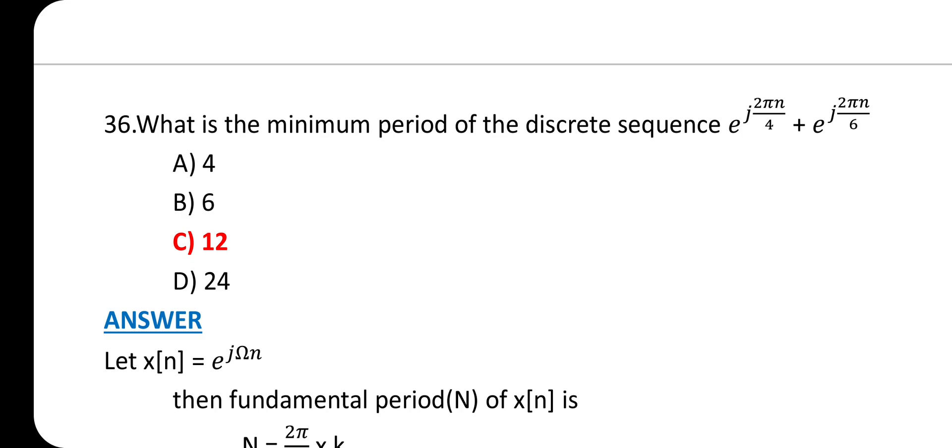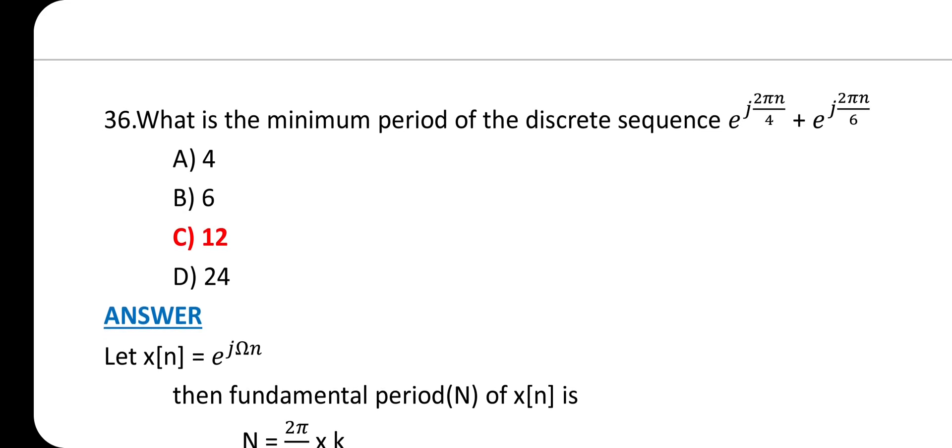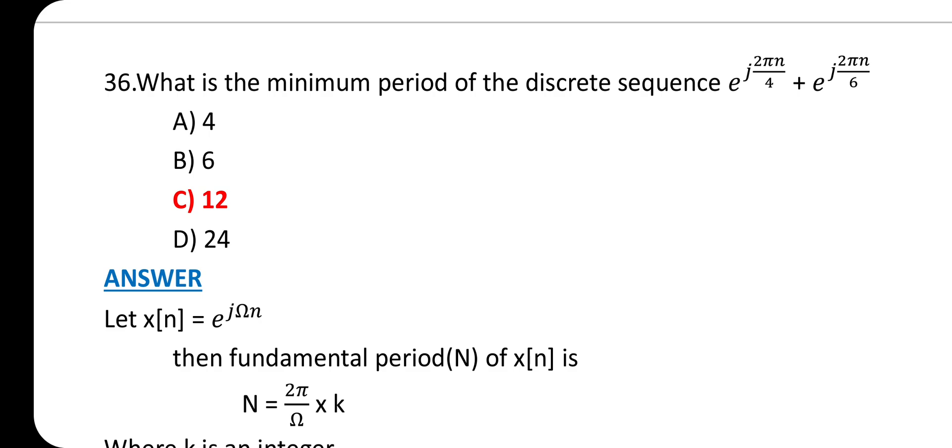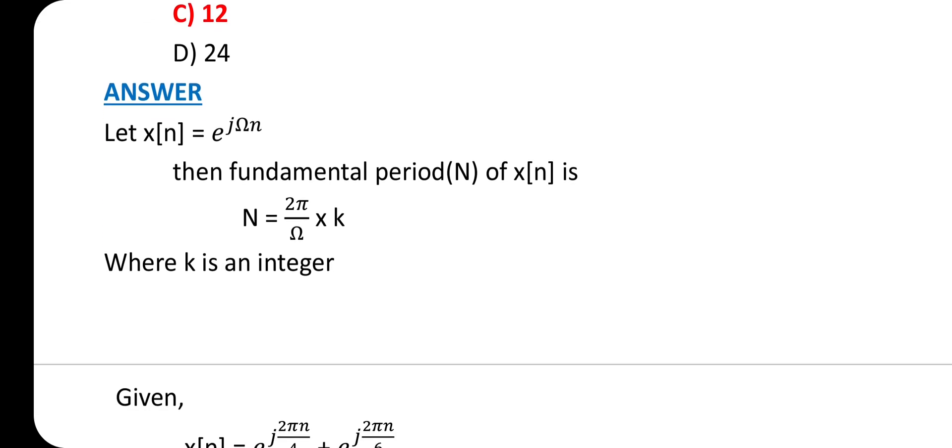Question 36: What is the minimum period of the discrete sequence e^(j2πn/4) + e^(j2πn/6)? Answer is option C: 12. The fundamental period is the smallest possible value of the period for a given sequence.